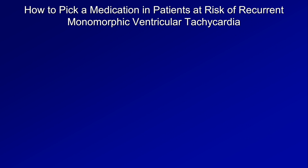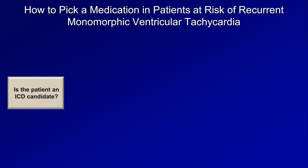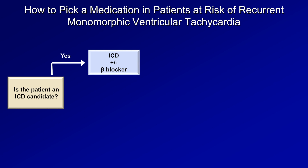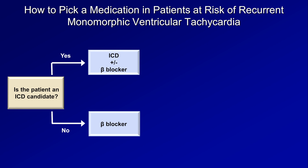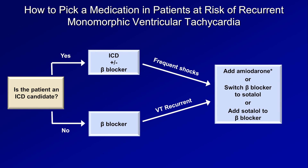To pick a medication in patients at risk of recurrent monomorphic VT, ask if they are an ICD candidate — an implantable cardioverter defibrillator. If yes, then an ICD is by far the best option, to which a beta blocker is usually, but not always, added primarily to prevent VT altogether and to decrease the burden of shocks. If the patient is not an ICD candidate, for example if they have limited life expectancy, then just a beta blocker. If patients in either situation continue to have a significant burden of VT, options include adding amiodarone, switching the beta blocker to sotalol, or more commonly just adding sotalol to the beta blocker already present.